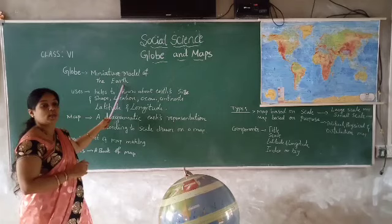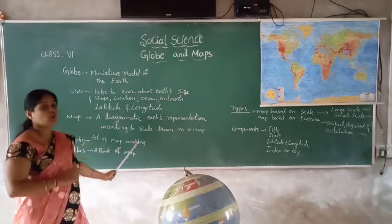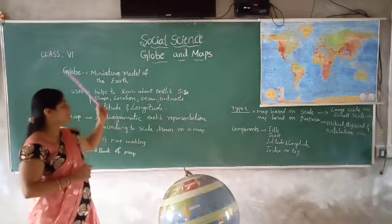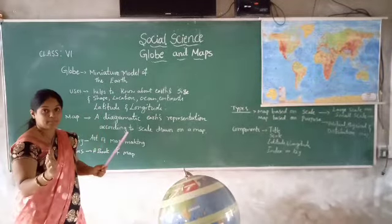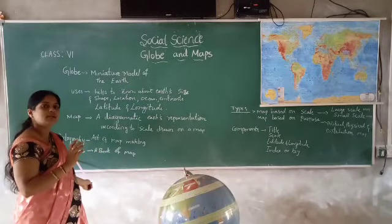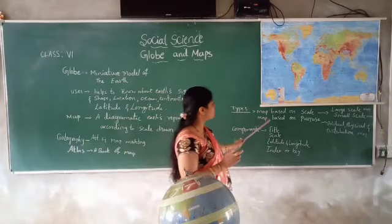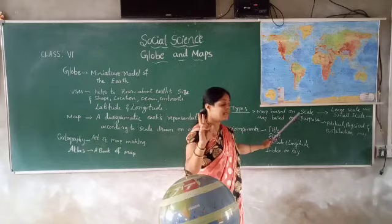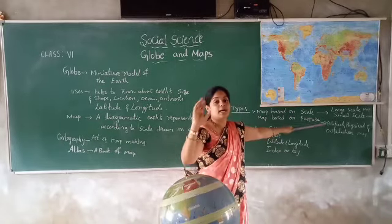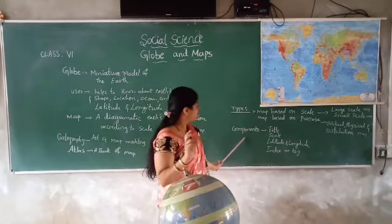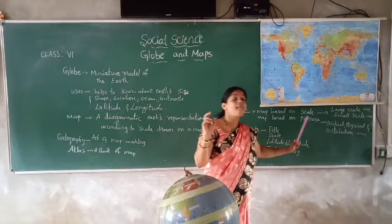So what is the globe? Miniature model of the earth is called globe. What is the map? Diagrammatic earth's representation according to scale drawn on a map — that is called map. What is cartography? It is the art of making maps — called cartography. What is Atlas? A book of maps is called Atlas. What are the types of maps? Two types: map based on the scale and map based on the purpose. Map based on the scale: large scale map and small scale map. Map based on the purpose: political map, physical map, and distribution map.